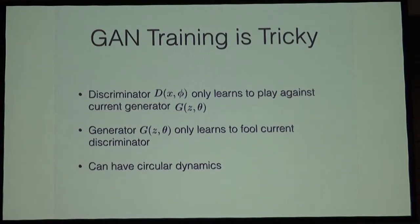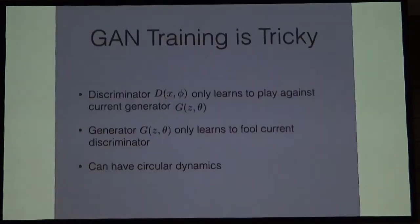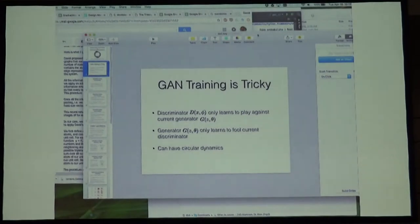I'm working with this one student, John Lorraine, who sort of says, well, this is kind of weird, this optimization where we train the discriminator to play against this generator, we update it, and then we train a new generator to learn against the old discriminator. This leads to these well-known circular dynamics.